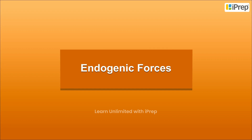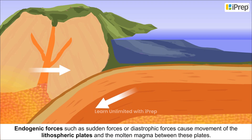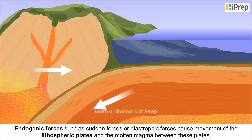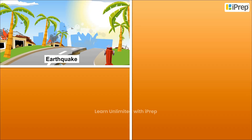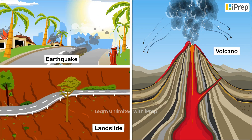Endogenic forces, such as sudden forces or diastrophic forces, cause movement of the lithospheric plates and the molten magma between these plates. This results in movements such as earthquakes, volcanoes, and landslides.